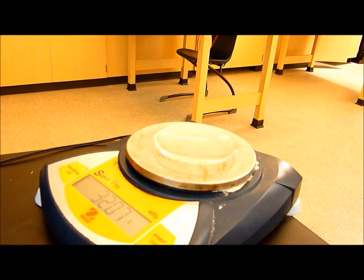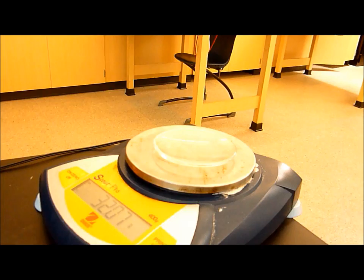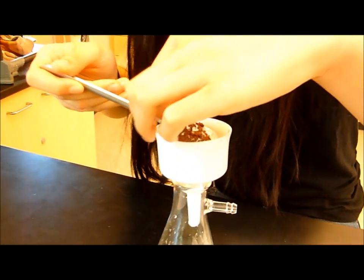So, there is a piece of filter paper in the funnel. So, we're going to take out the piece of filter paper and scrape all of the copper onto the watch glass.